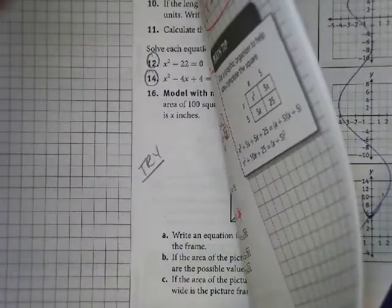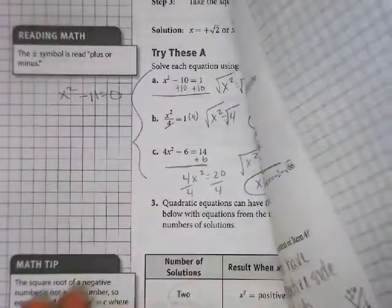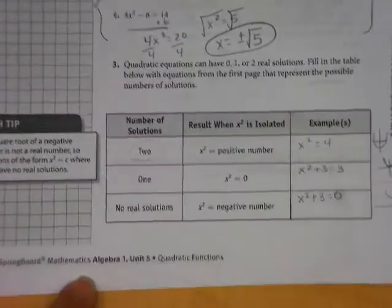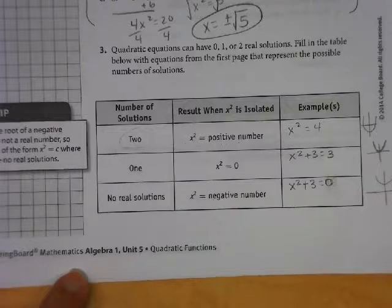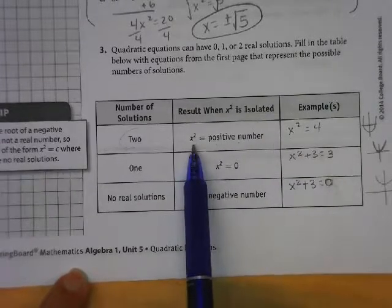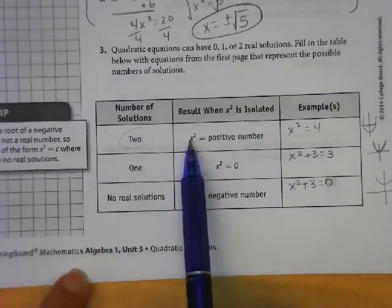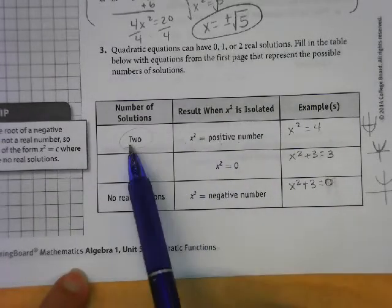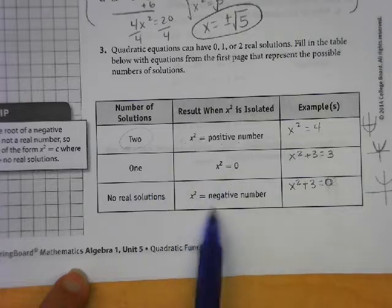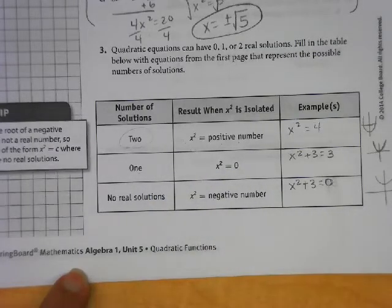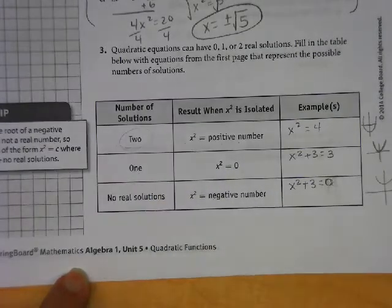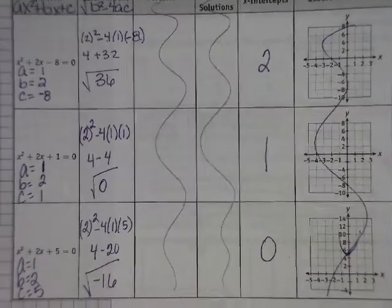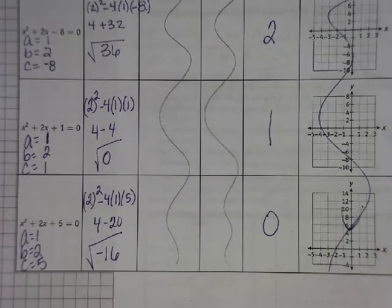If you go back to page 468, we said when we did the square root method, if x squared was positive, there were two solutions. If it was 0, there was one solution. If it's negative, there are no solutions. That pattern doesn't change. But instead of it being an x squared, we're finding the discriminant.